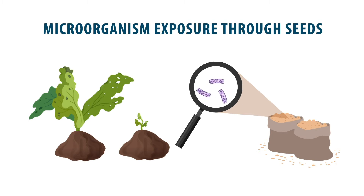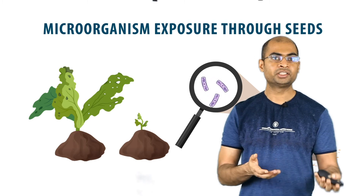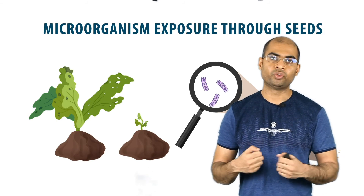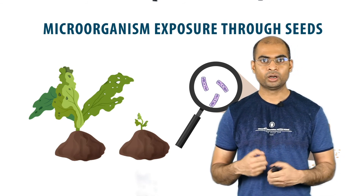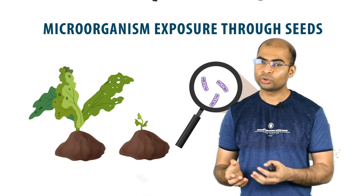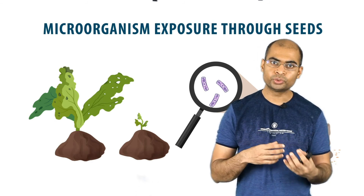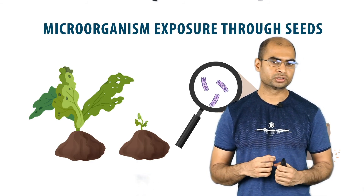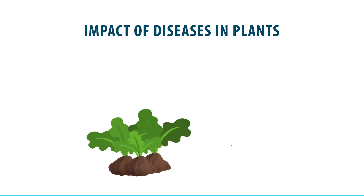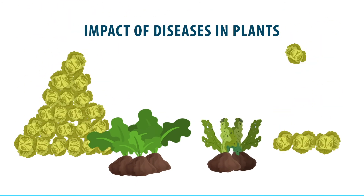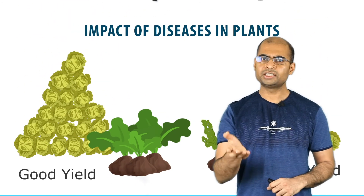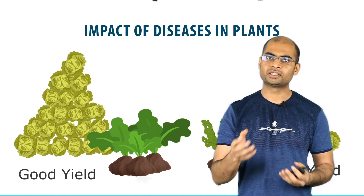Now, once microbes infect a crop — let's say of wheat — they fight with it for nutrition. They can also cause discoloration of the fruits and leaves due to damage to the plant's organs. All of this results in bad yield. Let's take a look at some examples.